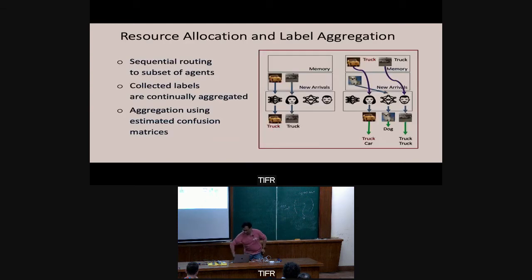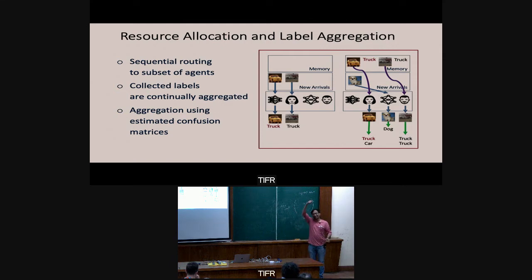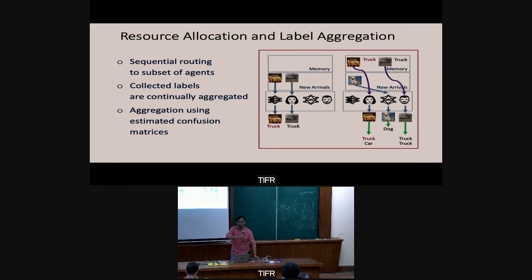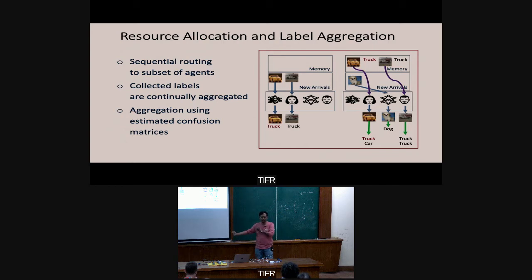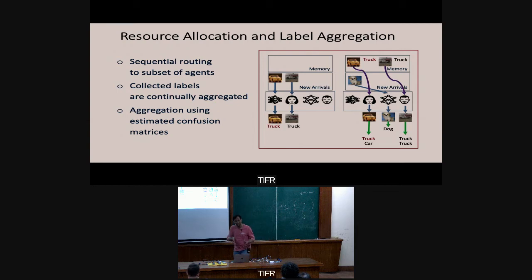The problem we really care about is: we don't know the confusion matrices, we don't know who's an expert for what, we don't know the generative model statistics — we only know there's a stationary generative model — and we don't know the ground truth. For the first half of this talk, I'll assume I know the generative model and the classifier matrices, then figure out how to represent the system. After that, I'll talk about online tensor decomposition to learn everything and put it all together.